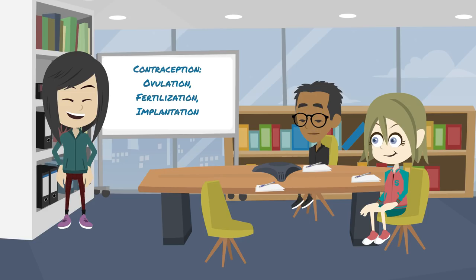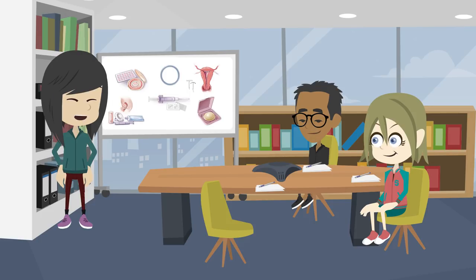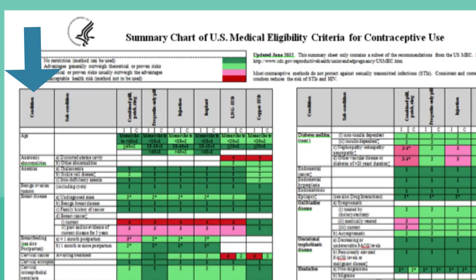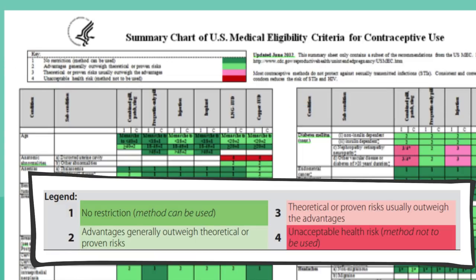Many medical conditions limit a woman's ability to use certain contraceptive methods. The CDC Medical Eligibility Criteria is a very helpful resource. A reference chart displays common medical conditions on the left and contraception options across the top; numbers and colors indicate the safety of a particular method in the context of a specific medical condition. This is an extremely valuable resource for all clinicians and can be found on the CDC webpage.